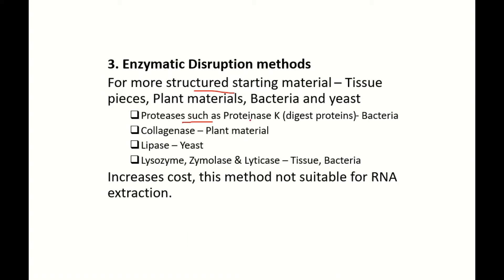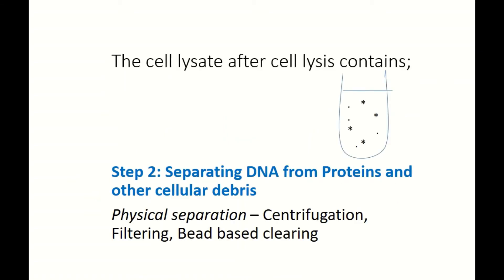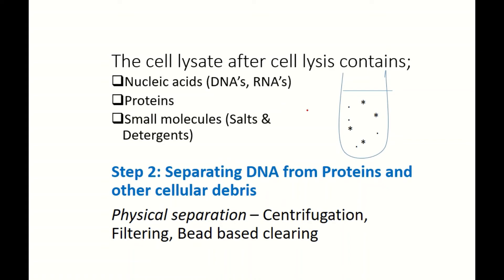Enzymatic disruption can also be used, particularly for structured samples. Enzymes used include Proteinase K to digest proteins, collagenase for plant material, lipase, lysozyme, zymolase, and lyticase for tissues and bacteria. Note that this increases cost and is not suitable for RNA, as RNA is very sensitive. Once digestion is complete you are left with a cell lysate containing nucleic acids. You can add RNase to digest RNA if you want DNA, or DNase to digest DNA if you want RNA.